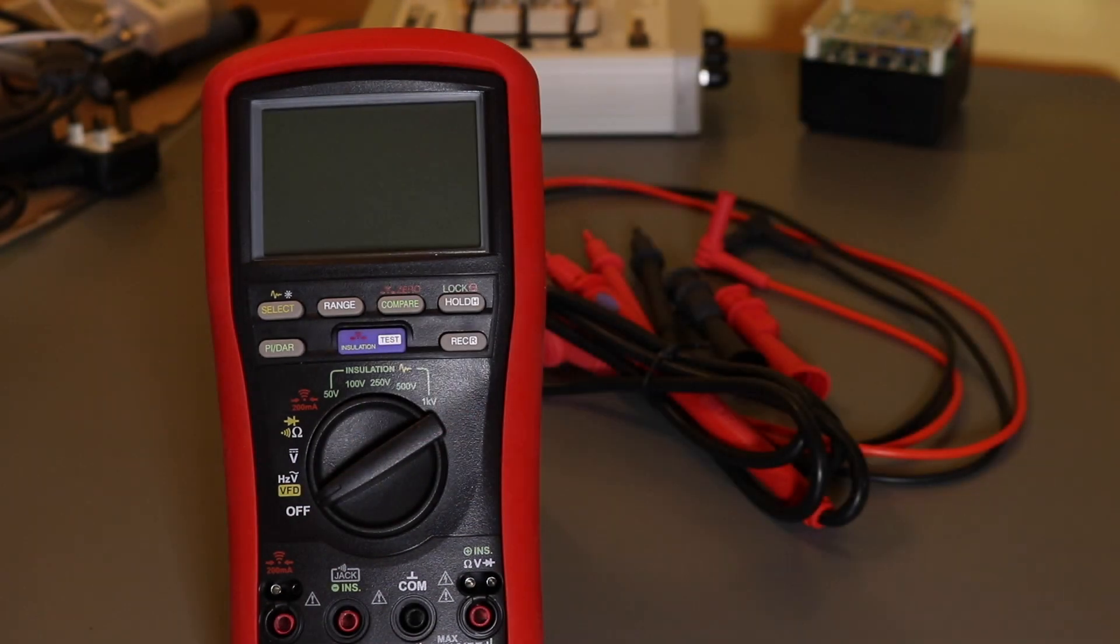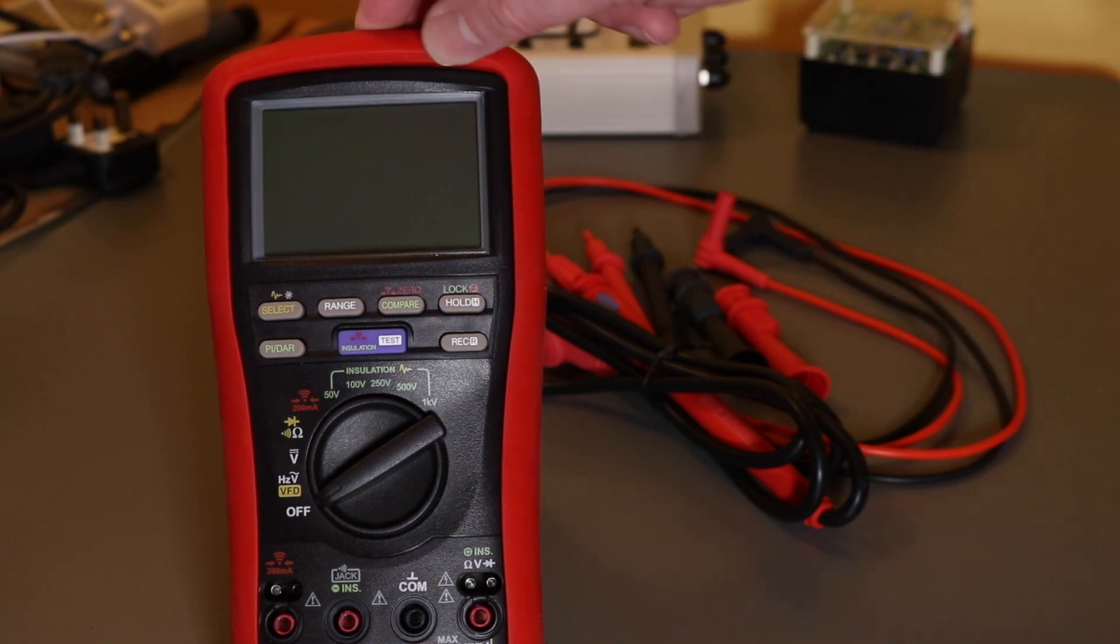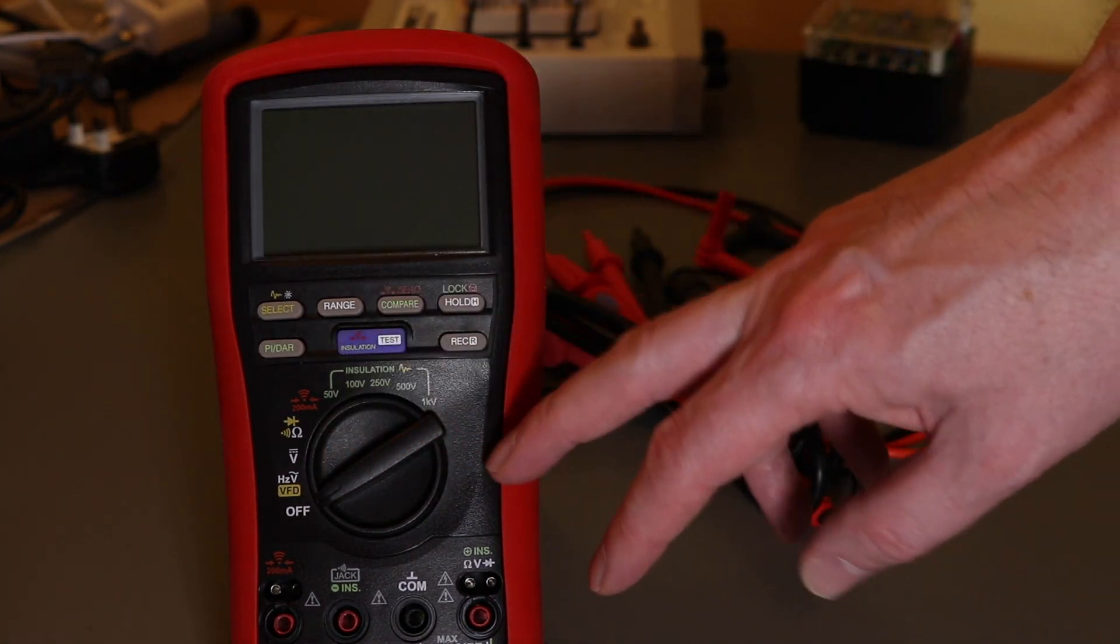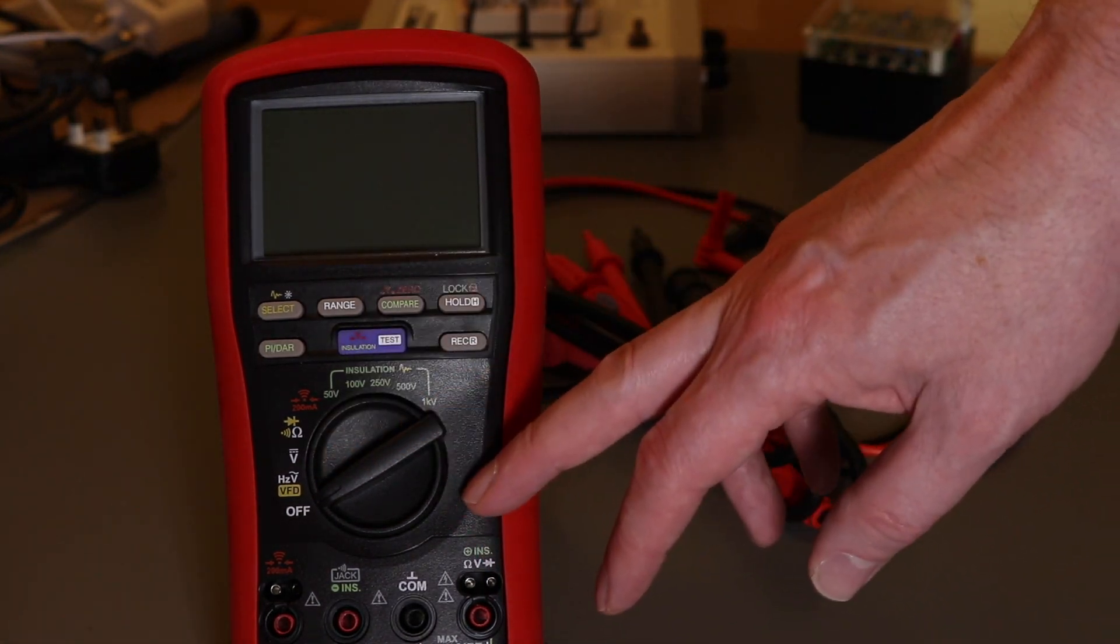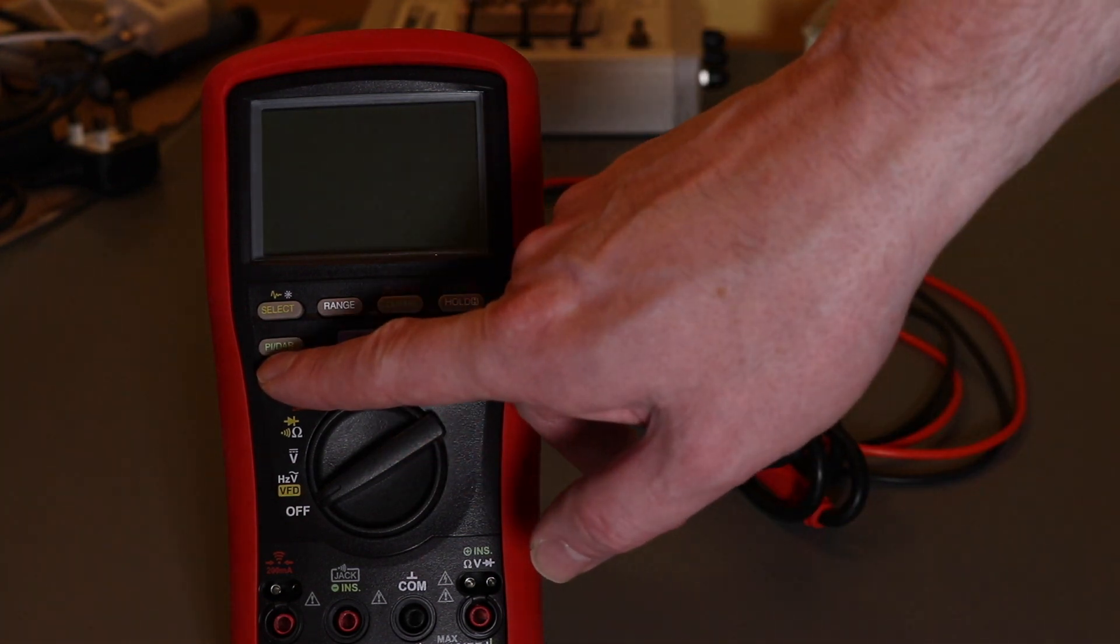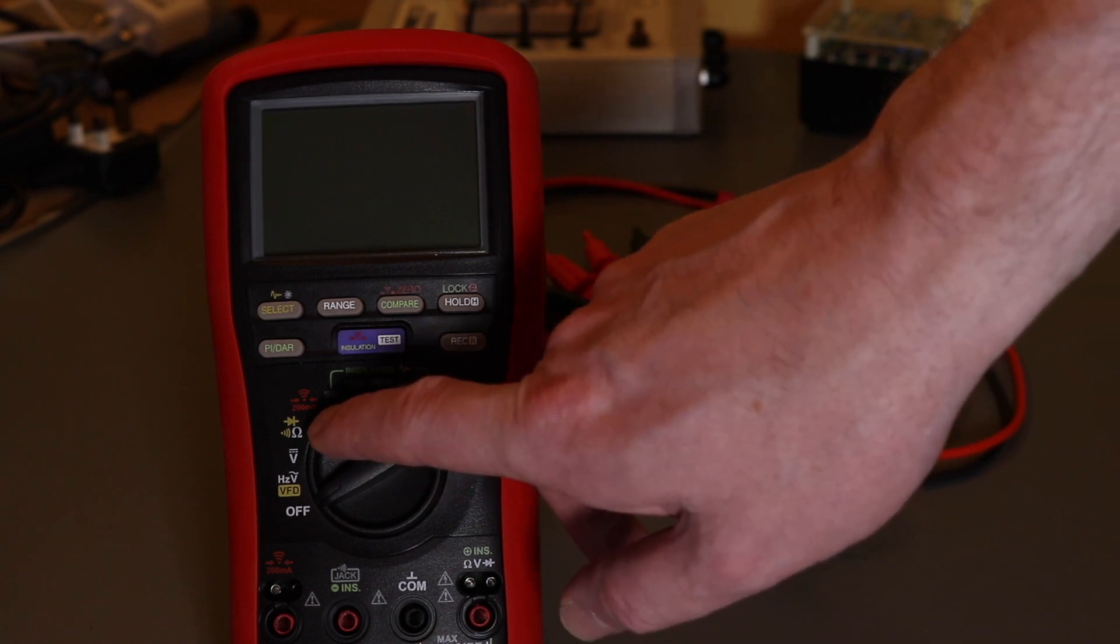Some of the other meters, including ones that Brymen themselves do, have better multimeter functions. However, this is the only meter that they do that has both the DAR and PI functionality along with the earth bond test at 200 milliamps.